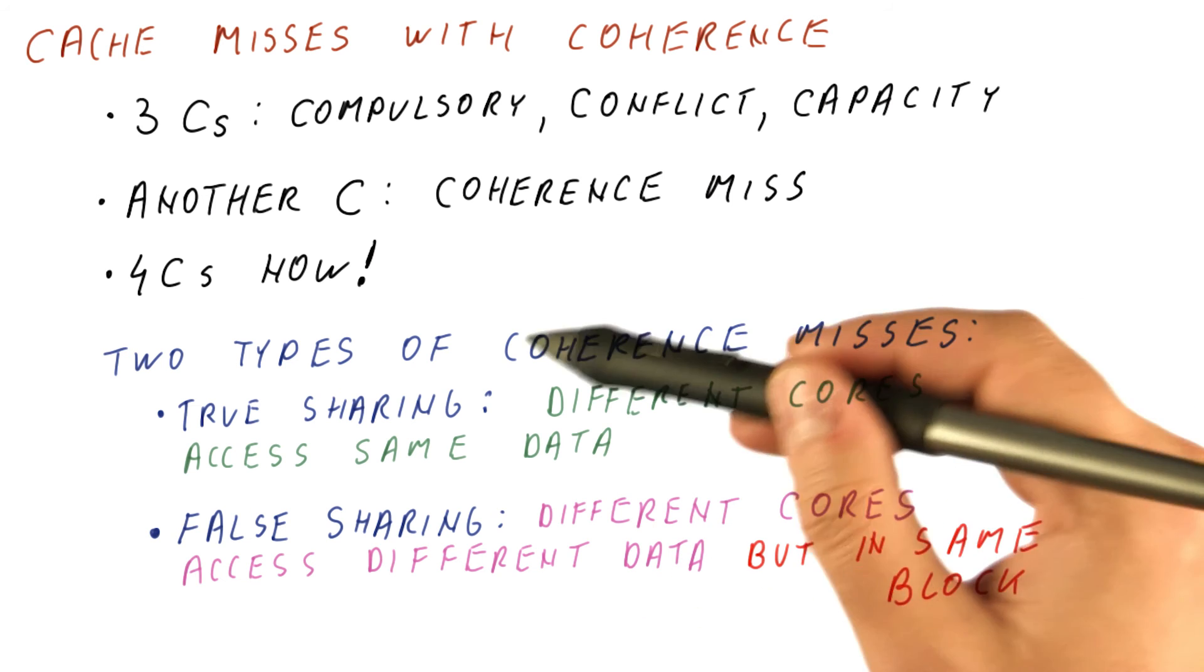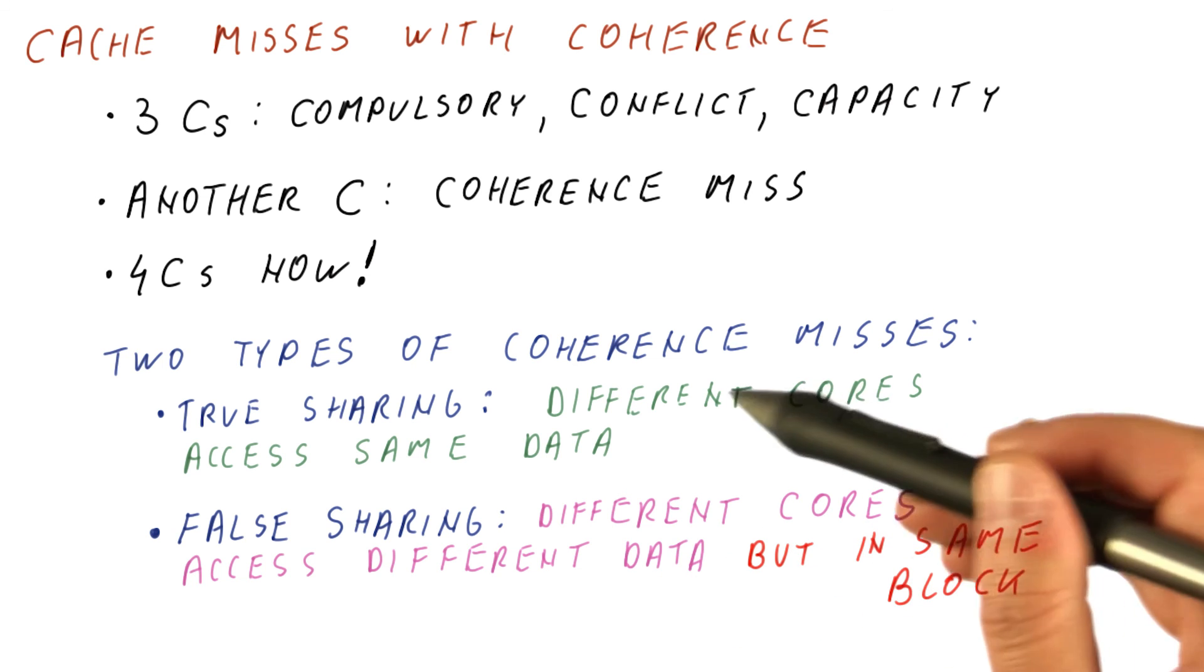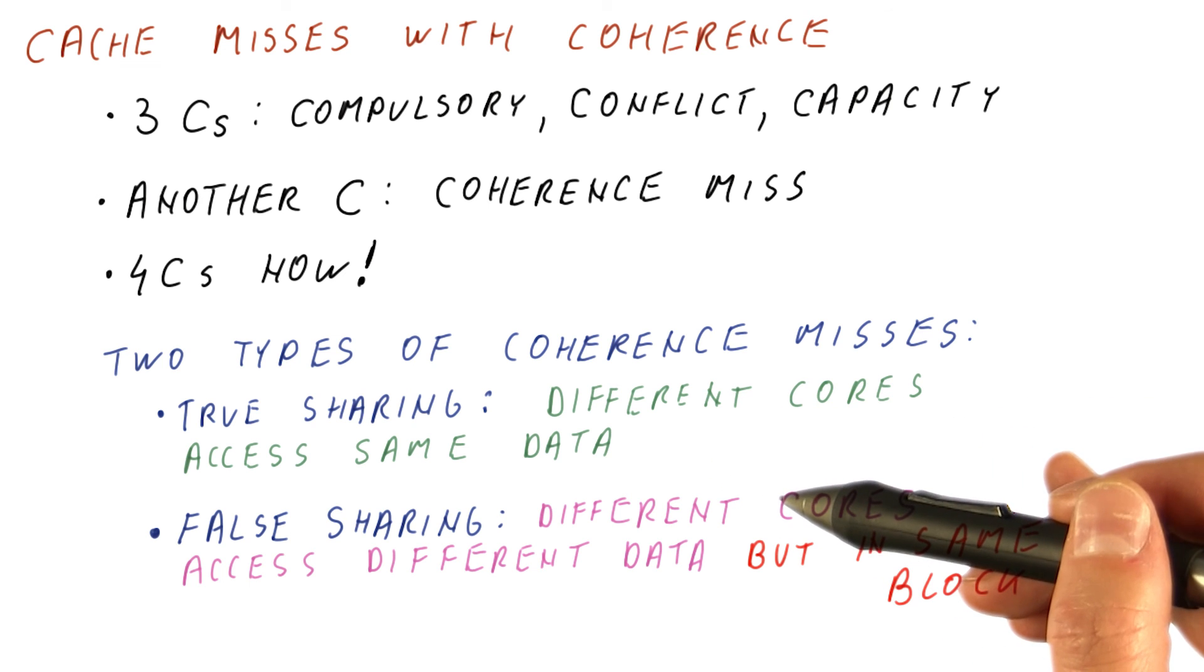So it's called false sharing because really there is no true data sharing. But as far as coherence is concerned, we do everything at the granularity of cache blocks. So two items being in the same block makes them behave like the same item, as far as coherence is concerned.